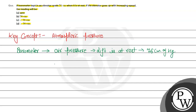We can write it: P0 will be equal to rho times G times H. In this particular case, the value of H is 76 cm.